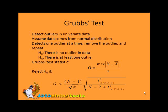For Grubbs' test: H0 states there is no outlier in the data; HA states there is at least one outlier. The Grubbs' test statistic G is the maximum of the absolute value of (X minus X-bar) divided by S. Reject H0 if G is greater than the value calculated using the corresponding formula.